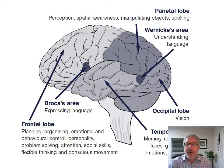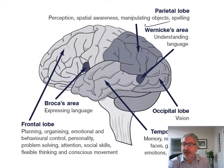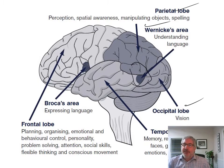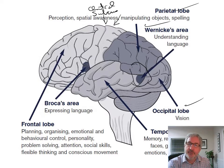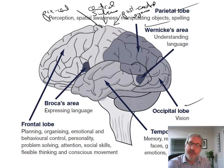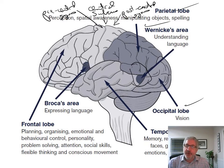Here's the parietal lobe. We have Wernicke's area back here. Occipital lobe for vision. Parietal lobe for spatial awareness, manipulating objects, spelling — that's your parietal association area. You have your central sulcus here, your postcentral gyrus — that's your somatosensory area — and the precentral gyrus is your primary motor area. Temporal lobe: memory, remembering faces and emotions. Frontal lobe: planning, organizing, higher-level skills, emotional and behavioral control, personality, problem-solving, attention, social skills. Broca's area is expressing and creating language.